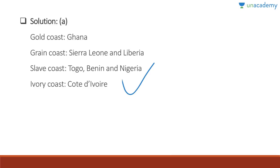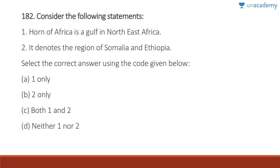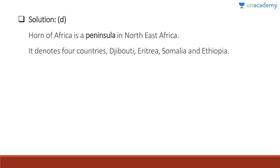Question 182: Horn of Africa is a gulf in northeast Africa — wrong, it is a peninsula. It is comprised of four countries using the mnemonic SEED: Somalia, Eritrea, Ethiopia, and Djibouti. Answer is D, neither one nor two. The Horn of Africa is a peninsula in northeast Africa comprising four countries.